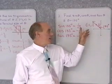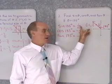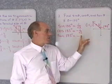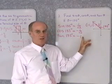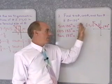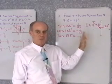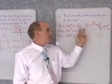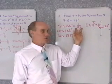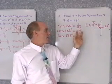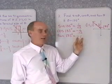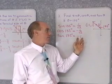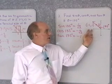The tangent of 135° is the y-coordinate divided by the x-coordinate, which is -1 over 1, or -1. So here are sine of 135°, cosine of 135°, and tangent of 135°. These will never change — every time we have 135 degrees, these are the trigonometric values for sine, cosine, and tangent.